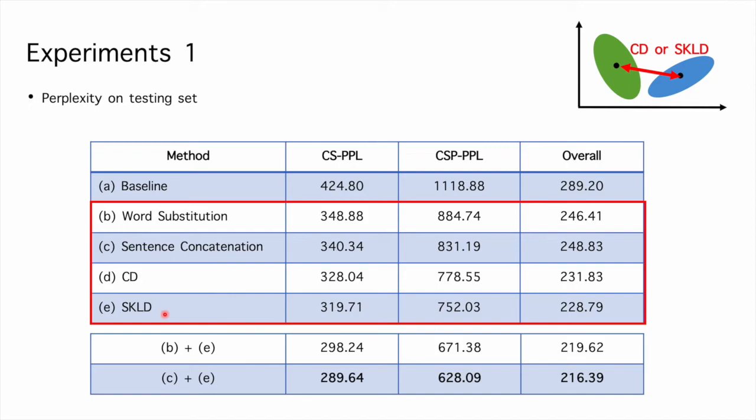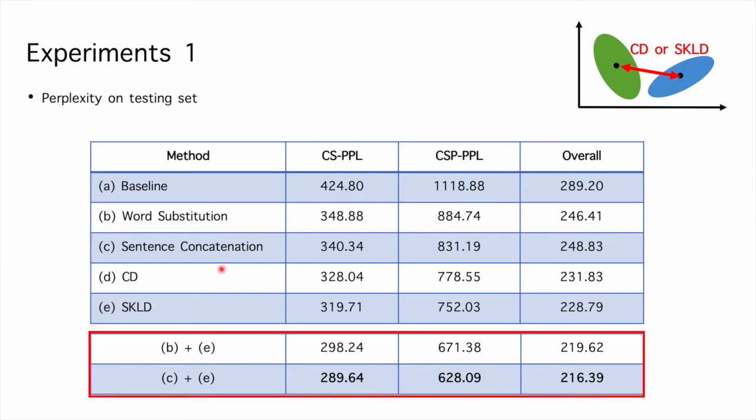However, applying cosine distance and symmetric KL divergence constraints resulted in better perplexity than language model trained with pseudo code-switching data. Using synthetic code-switching text and applying constraints are not in conflict with each other. So we show two results with combining techniques above. As we can see, using sentence concatenation method and applying symmetric KL divergence resulted in the best perplexity.